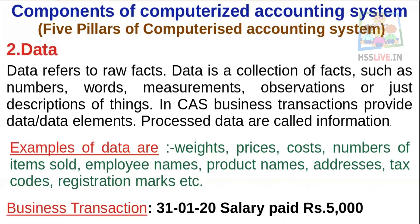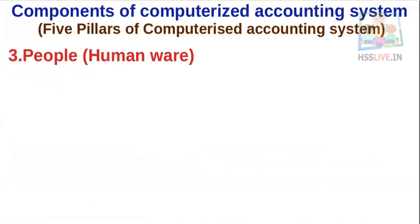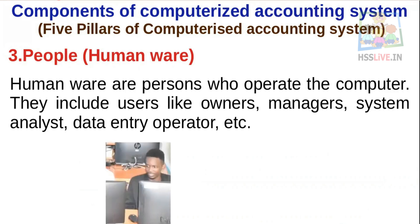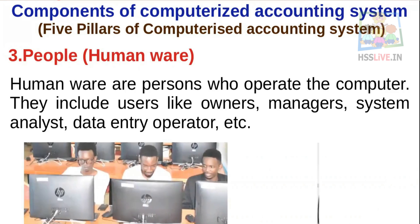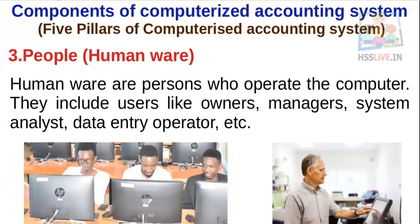Number three: People, or Humanware. Humanware are the persons who operate the computer — inputting data and utilizing information from the computer. They include users such as managers, system analysts, data entry operators, etc.